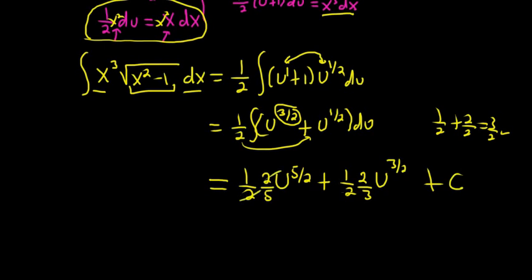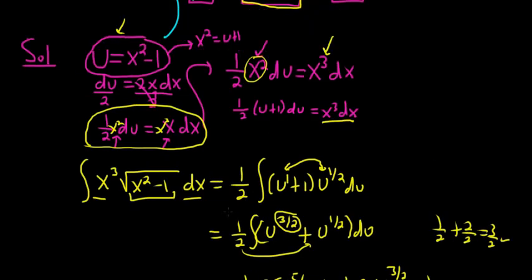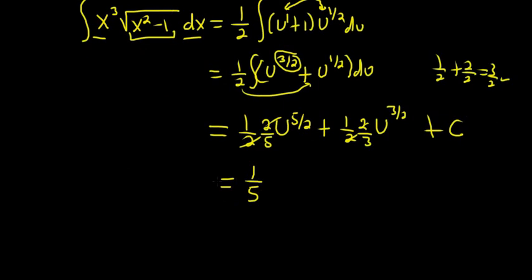This is equal to 1 fifth. And I already forgot what u was. I believe it was x squared minus 1. Yep. So u is x squared minus 1. So x squared minus 1 to the 5 halves.